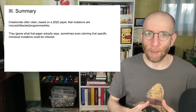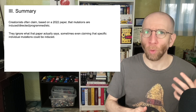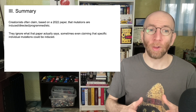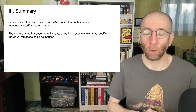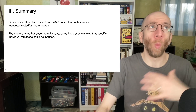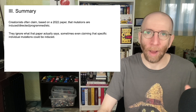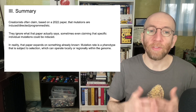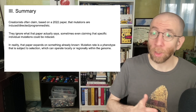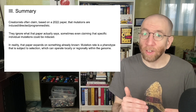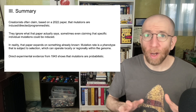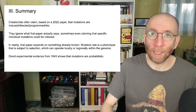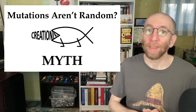So in summary: creationists often claim, based on a 2022 paper, that mutations are induced, programmed, or directed. They ignore what that paper actually says — sometimes even claiming that specific individual mutations were induced, which is not even close to what the paper says. In reality, the paper expands on something already known: mutation rate is a phenotype subject to selection, and that selection can operate locally or regionally within a genome, leading to regions selected to have a higher or lower mutation rate. And direct experimental evidence from 1943 shows conclusively that mutations are probabilistic. Mutations aren't random? That is a creation myth.